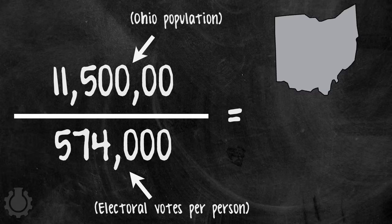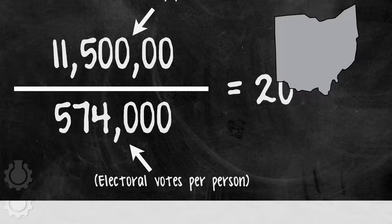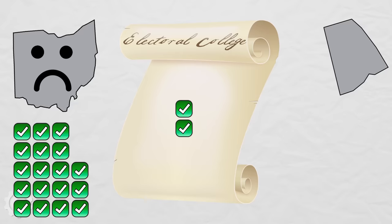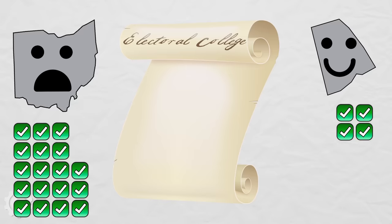For example, there are 11.5 million people in Ohio. So, to fairly represent them, it should get 20 electoral votes. But the Electoral College doesn't give Ohio 20 votes — it only gets 18. Two less than it should. Where'd those other votes go? To states like Rhode Island. Plucky Rhode Island has 1.1 million people in it, so it should have about two votes, but instead it gets four. Those extra two votes that should be representing Ohioans go to representing Rhode Islanders instead.